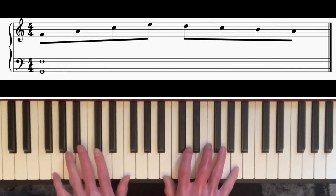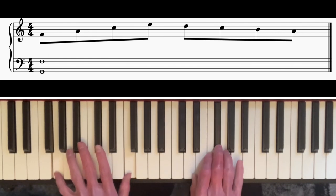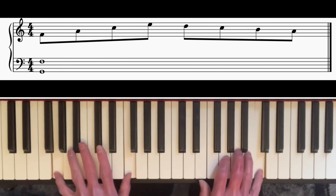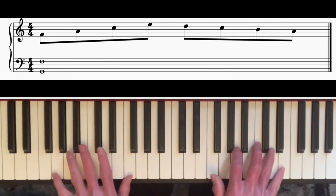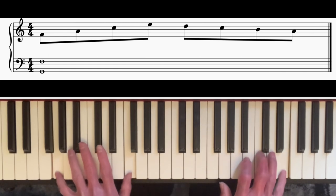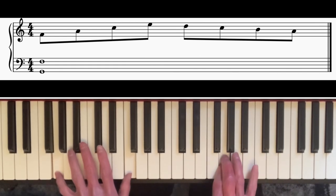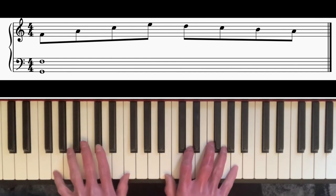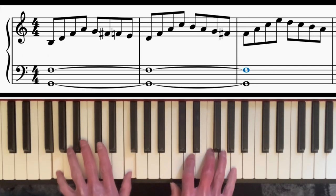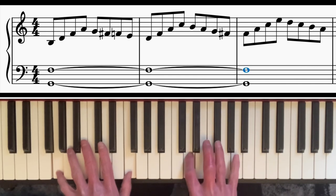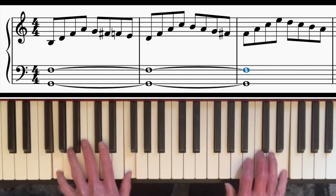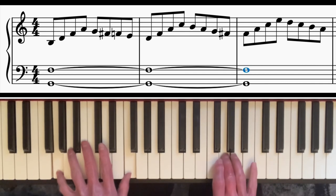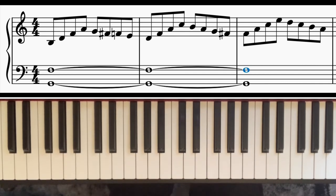By the way, you might notice I'm accenting the top note of the arpeggio every time. That really helps it to swing. You can then combine all three to make one long continuous pattern, which is what I played at the beginning, only in double time.